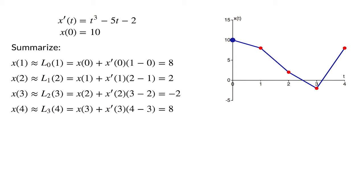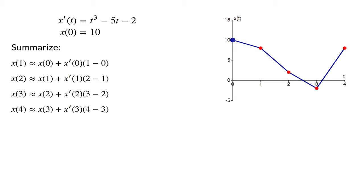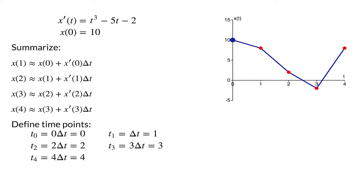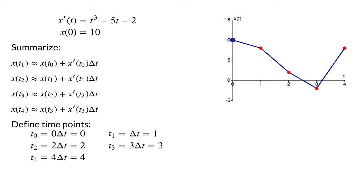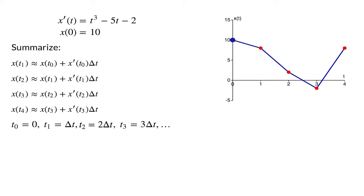When delta t equals 1, the forward Euler algorithm took 4 steps to get to t equals 4. Let's massage the formulas to make them prettier and easier to remember. First, let's get rid of some extra information and just keep the final formulas. Notice that in each step we are multiplying the derivative by the same number — 1 minus 0, 2 minus 1, 3 minus 2, etc. — which are all the length of the time interval delta t. Let's rewrite the formulas to show this dependence on delta t, evaluating functions and derivatives at the time points t0, t1, t2, etc., which are all multiples of delta t. In this way, our formulas are no longer specific to delta t equals 1, and will work for any value of the time interval delta t.